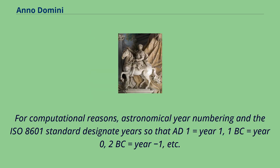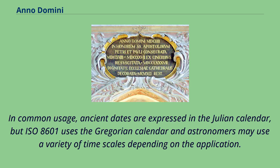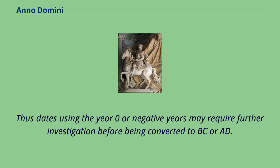For computational reasons, astronomical year numbering and the ISO 8601 standard designate years so that AD 1 equals year 1, 1 BC equals year 0, 2 BC equals year minus 1, etc. In common usage, ancient dates are expressed in the Julian calendar, but ISO 8601 uses the Gregorian calendar and astronomers may use a variety of time scales depending on the application. Thus, dates using year 0 or negative years may require further investigation before being converted to BC or AD.